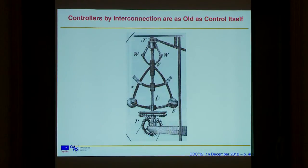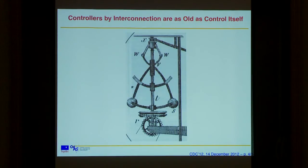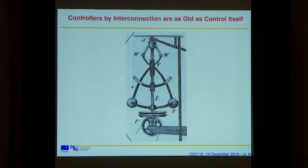This provides a very nice geometric framework for thinking about control differently. This is not new — you can think of the Watts governor as one of the oldest examples. Actually, in the Nile River there were already control by interconnection systems. In the times of Ramses II, there was a nilometer, and he was controlling the gates of the Nile River by putting a device very similar to this. So it's control by interconnection — you modify the behavior by adding a mechanical device that interacts with your system to be controlled.